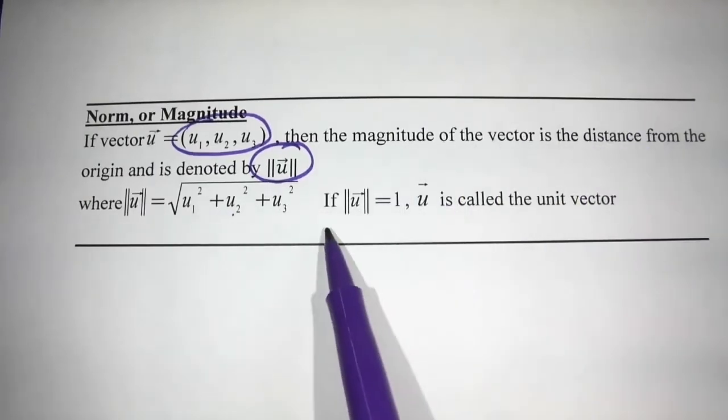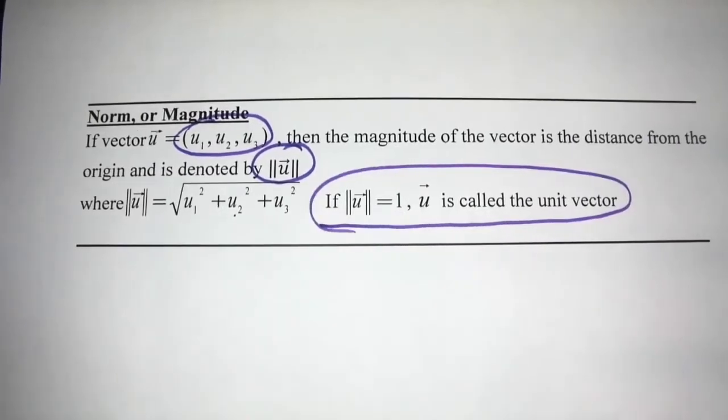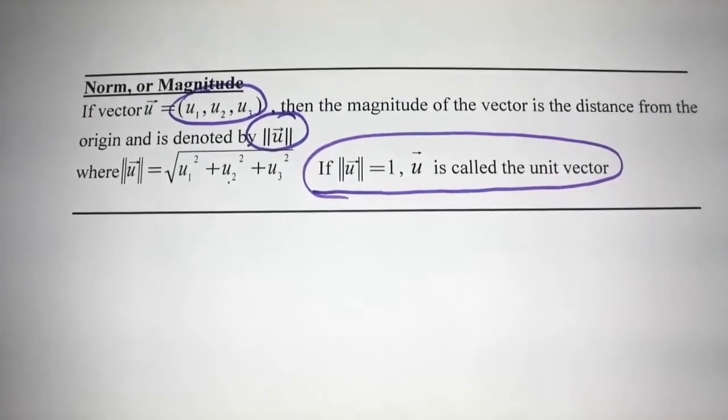And if the magnitude happens to be one when you calculate it, then it's called a unit vector.